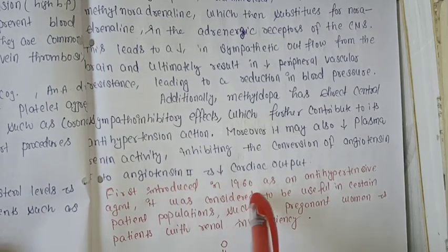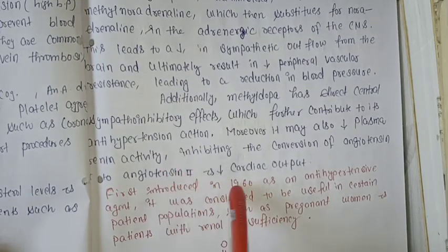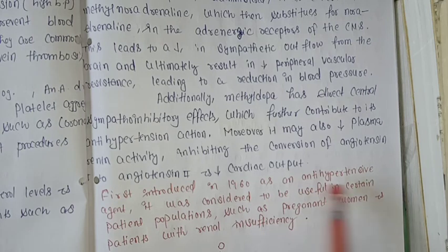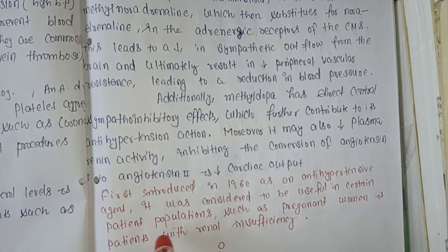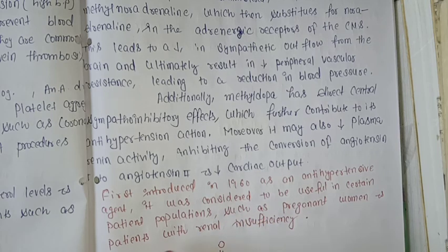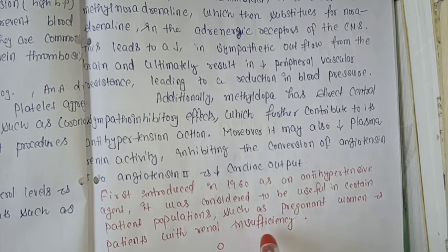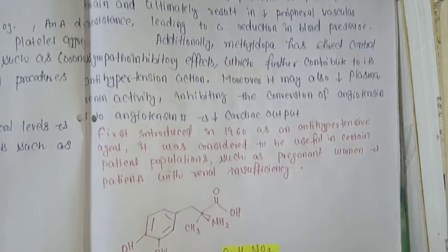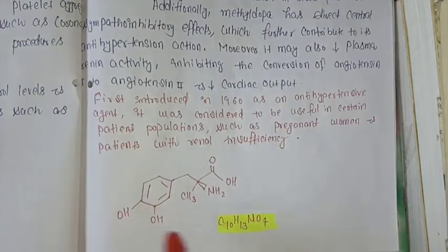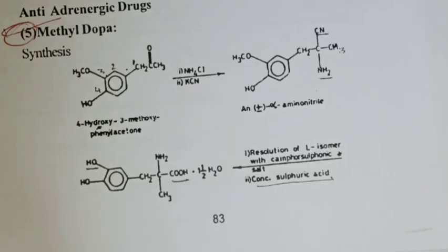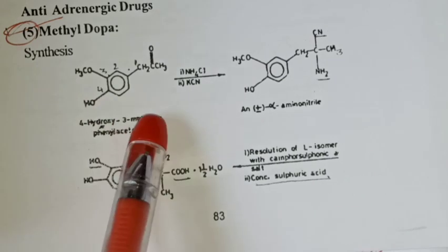First introduced in 1960, methyldopa was produced as an anti-hypertensive agent. It was considered useful in certain patient populations such as pregnant women and patients with renal insufficiency. Its molecular formula is C10H13NO4.